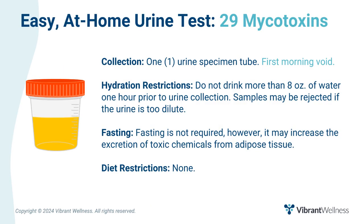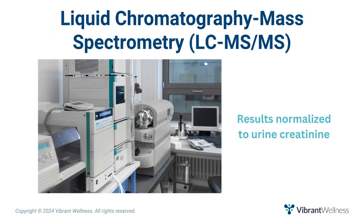The Vibrant Mycotoxins test is an easy at-home urine test that uses the gold standard liquid chromatography mass spectrometry to measure 29 of the most common mycotoxins. Liquid chromatography with tandem mass spectrometry is a powerful analytical technique that combines the separating power of liquid chromatography with the highly sensitive and selective mass analysis capability of triple quadrupole mass spectrometry.